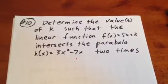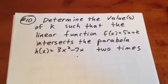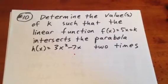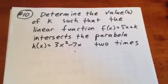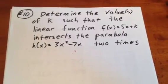In this next question, we want to determine the value or values of k such that the linear function f(x) = 5x + k intersects the parabola h(x) = 3x² - 7x two times.